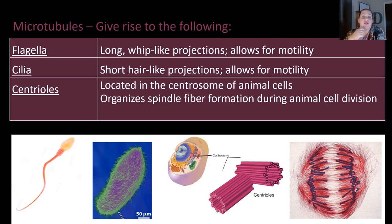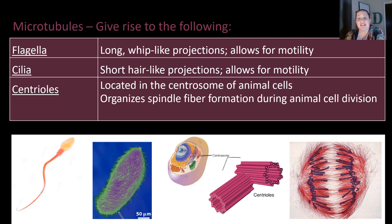Microtubules give rise to flagella — long whip-like projections that allow for motility or movement. Cilia are little hair-like projections which also allow for movement. Centrioles are located in the centrosome of animal cells and help organize the spindle fibers during animal cell division. We'll talk more about cell division later on.